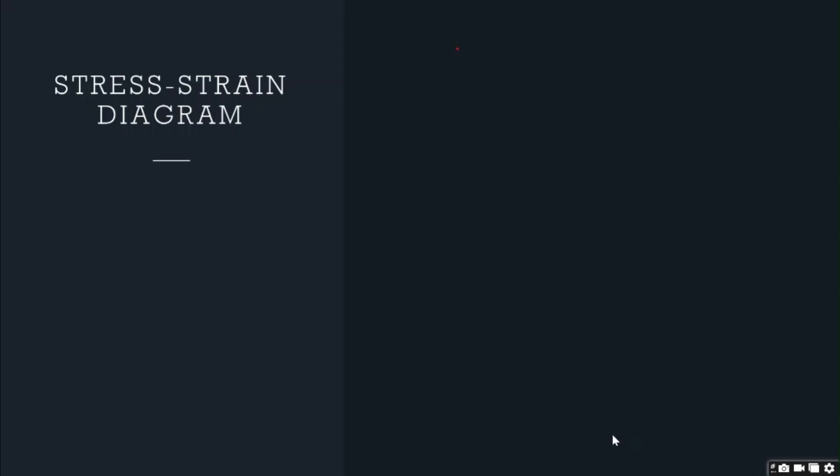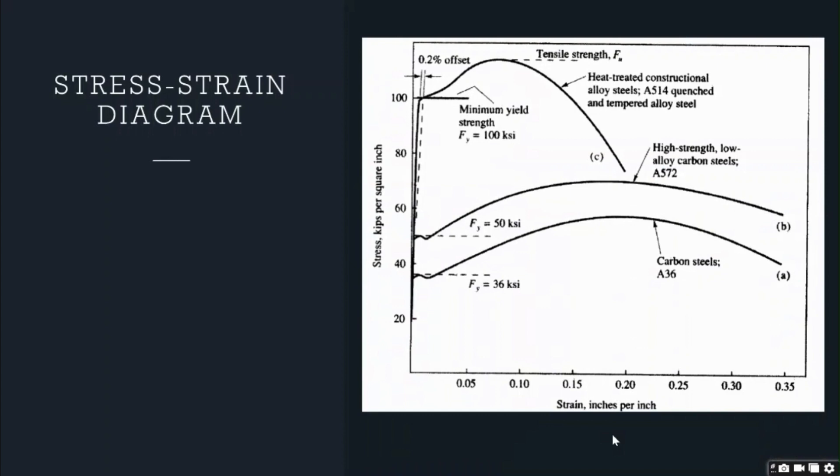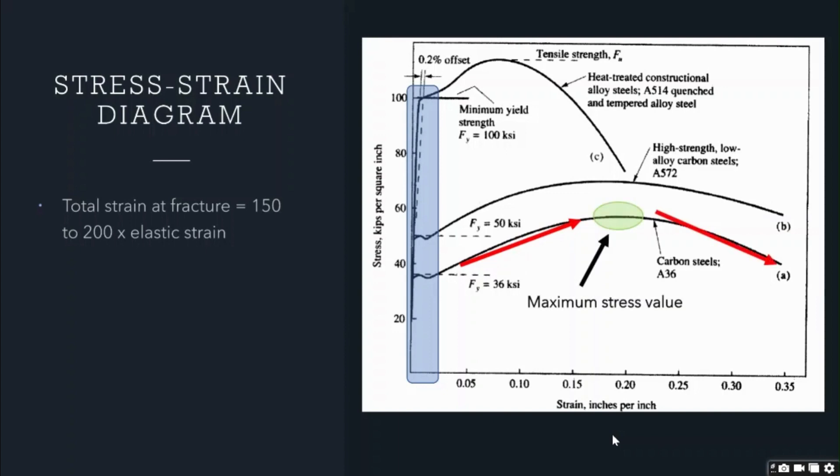Let's now look at the scaled stress-strain diagram. The previous diagram that we looked at was just a small part of this curve as highlighted in blue. The total strain at failure is about 150 to 200 times the elastic strain. The curve will actually continue up to its maximum stress value and then tail off before fracture. The cross section of the member sharply decreases, also called necking as discussed before, which happens just before the member fails.